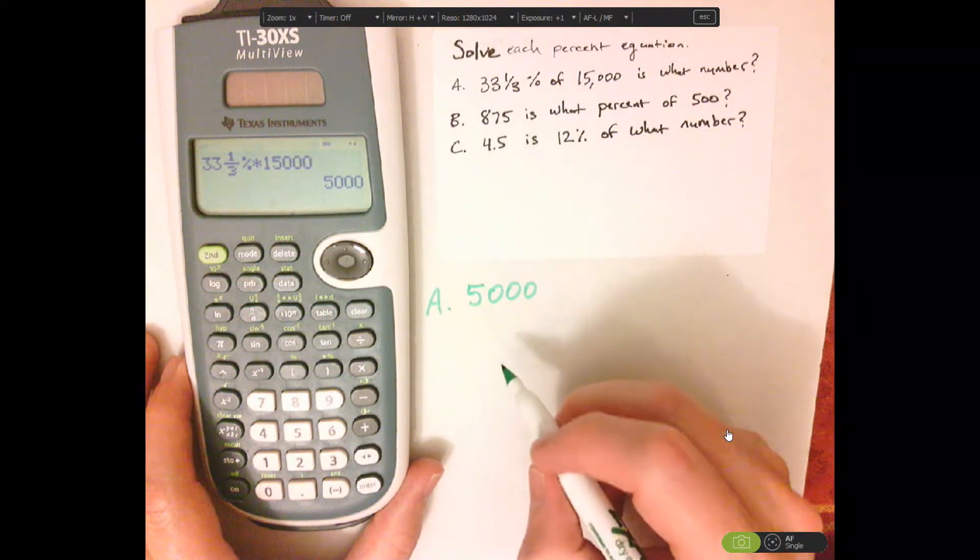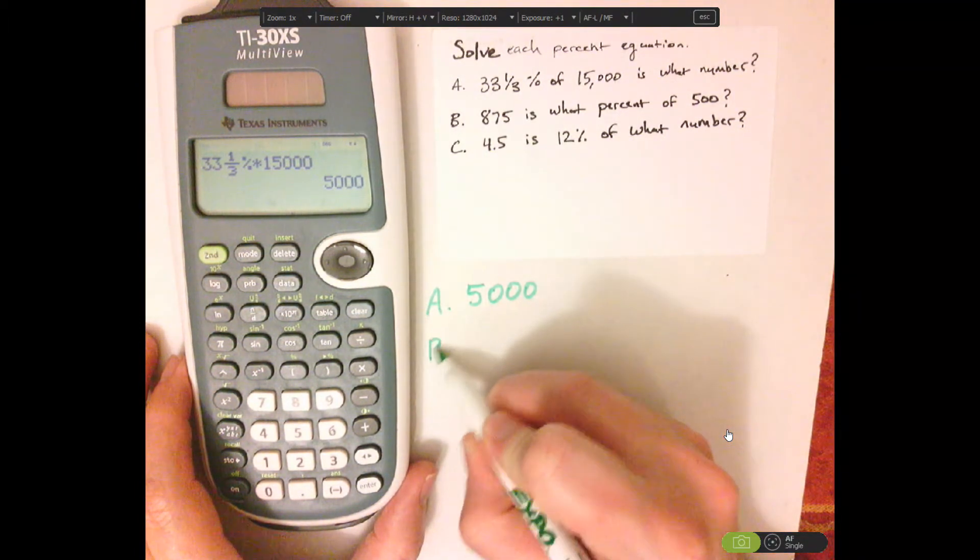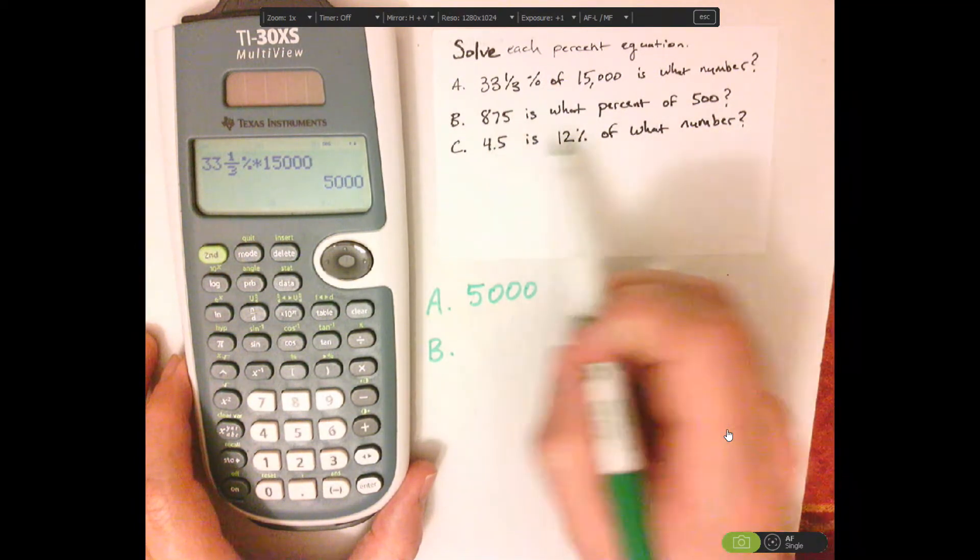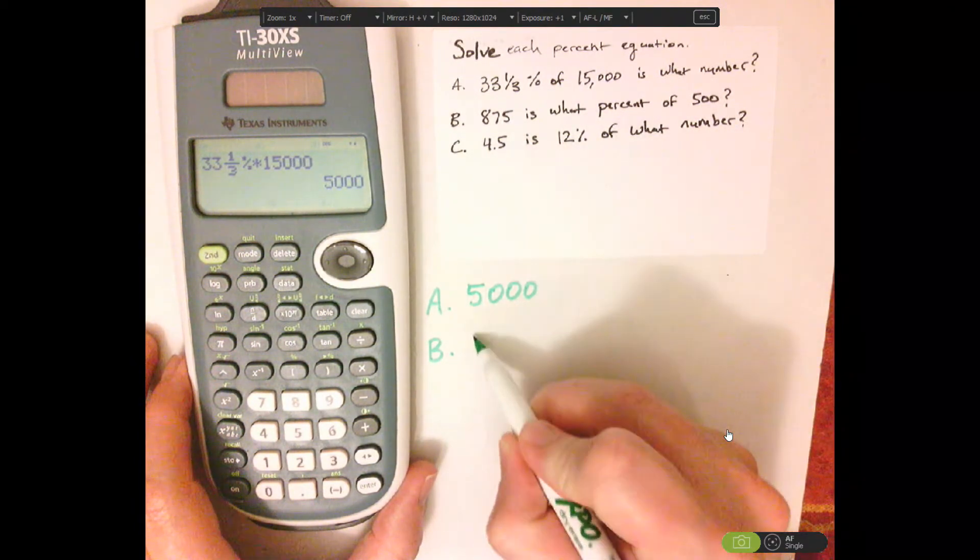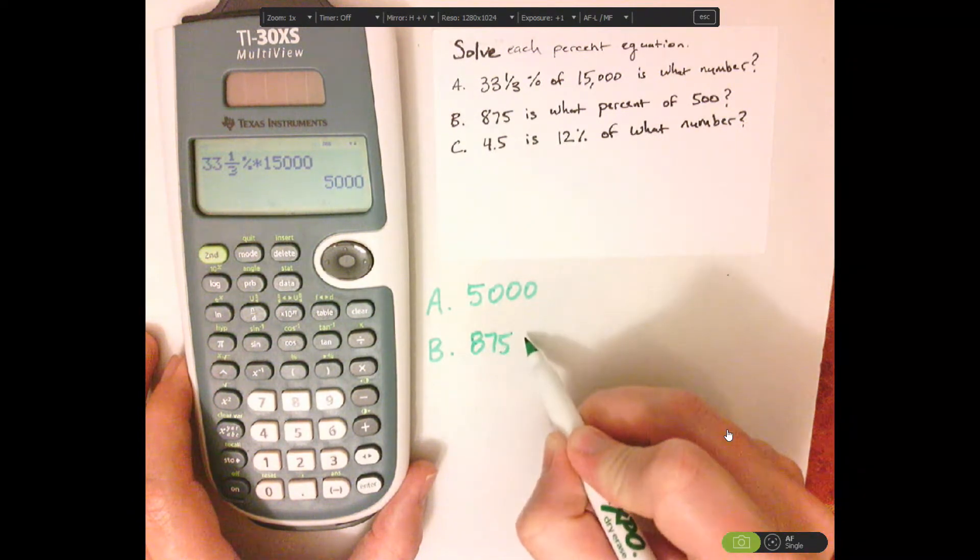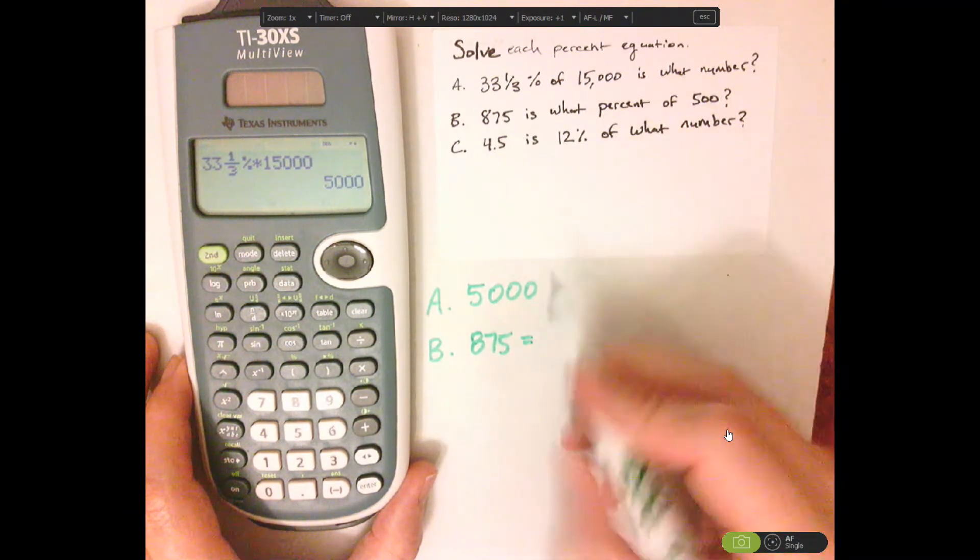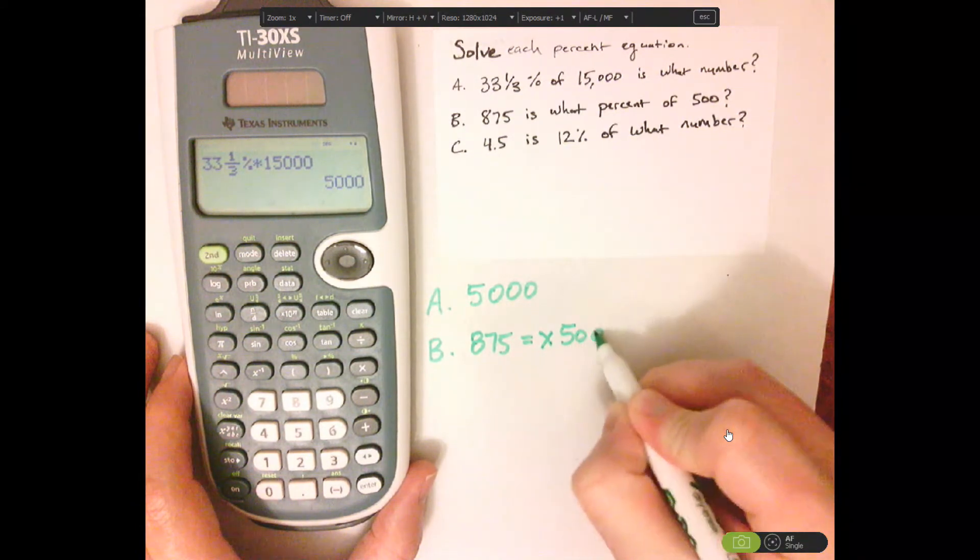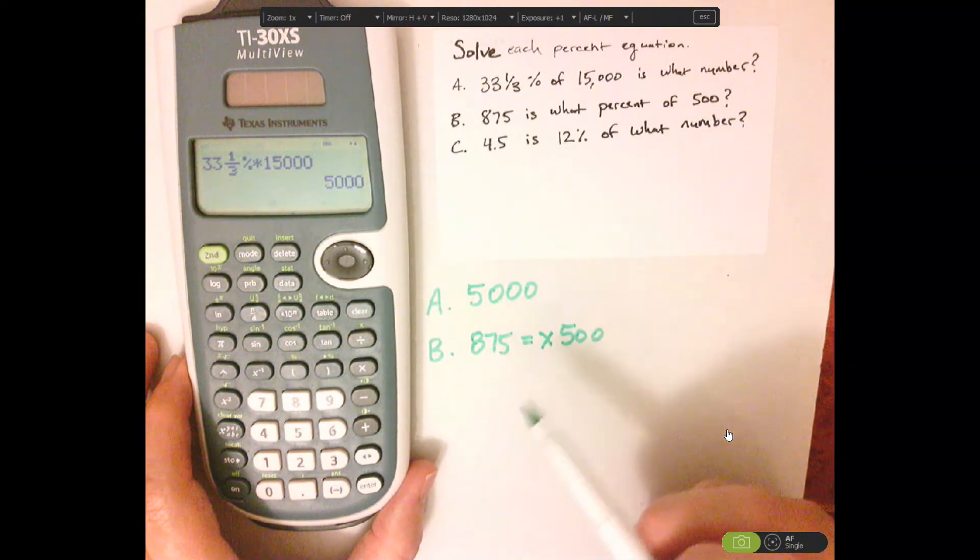All right, letter B. I'm going to just write it as it's translated. So that's 875 is what percent of 500.